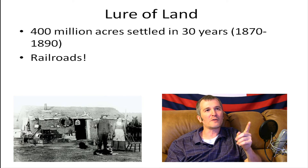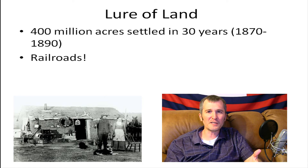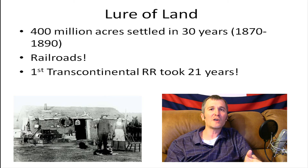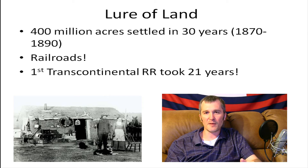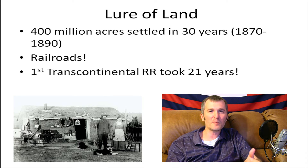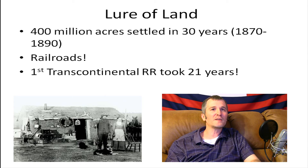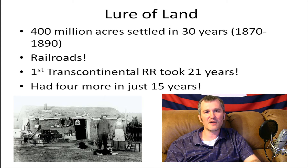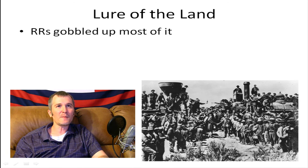Mainly it comes down to railroads — railroads, railroads. I cannot emphasize that enough. Think of the Oregon Trail: it took four or five months to get from St. Louis, Missouri to Oregon Territory. Once they completed the Transcontinental Railroad — which took 21 years, started before the Civil War — you could get across the country in less than a week, even four or five days. That's massive. It also made it possible to settle out there and still ship goods to market. The first one took 21 years, then they built four more in just 15 years, and the whole country got connected really fast.